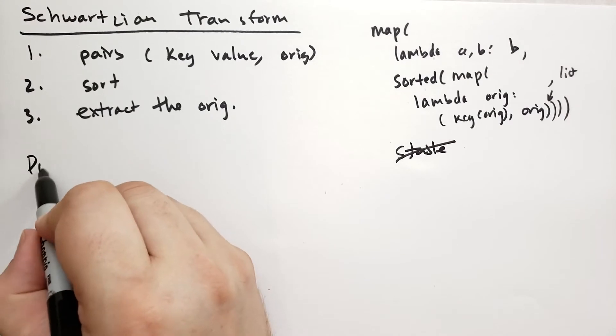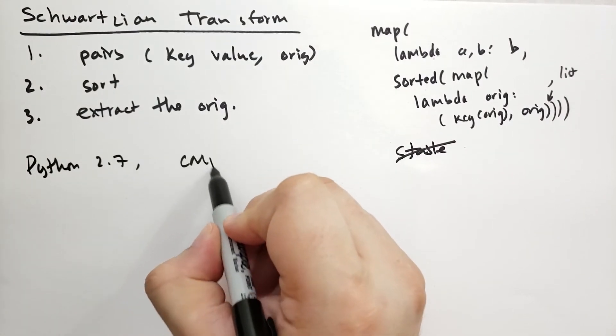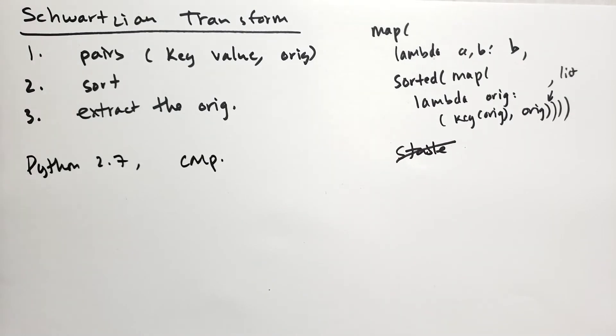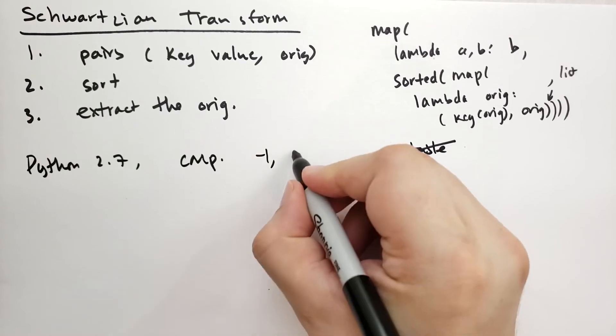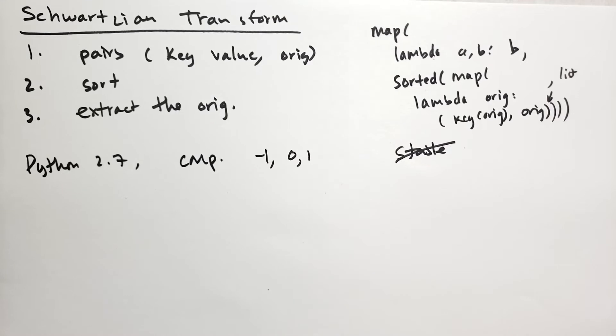In Python 2.7 there was the CMP parameter. What CMP was is it allowed you to pass in two values, compare those two values and return -1, 0, or 1 depending on whether they compared less than, equal, or greater than. We don't use that anymore. CMP actually slows down the sorting function a lot because typically you can transform the thing you want to sort into a list of integers or floats and then sort that. It's much faster to sort integers and lists directly.